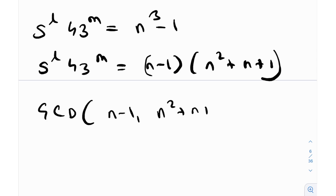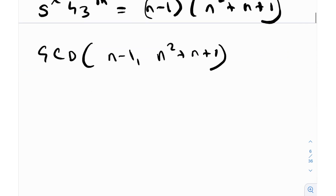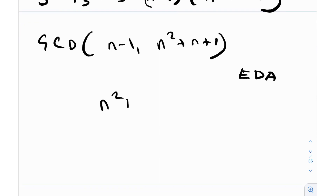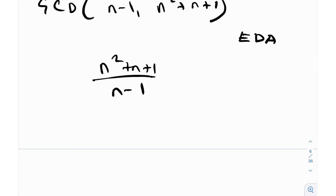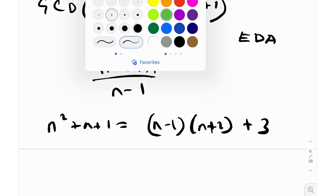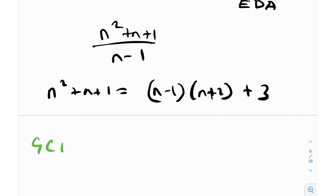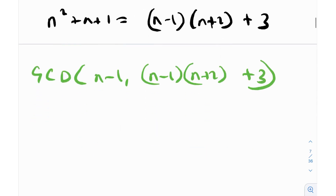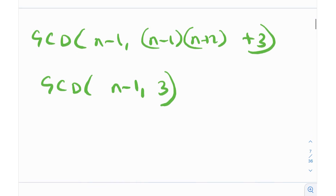To find gcd(n−1, n²+n+1), we run the Euclidean division algorithm: divide n²+n+1 by n−1. We get n²+n+1 = (n−1)(n+2) + 3, so the remainder is 3 and the quotient is n+2. This means gcd(n−1, n²+n+1) = gcd(n−1, (n−1)(n+2) + 3) = gcd(n−1, 3).